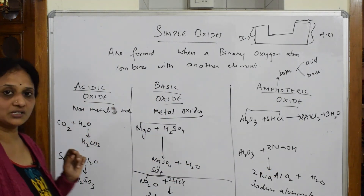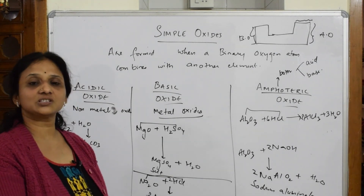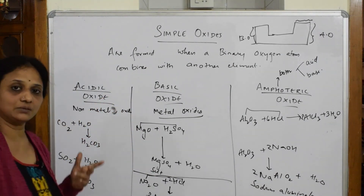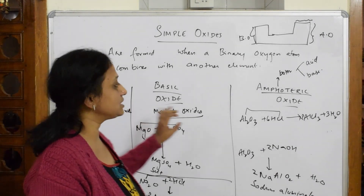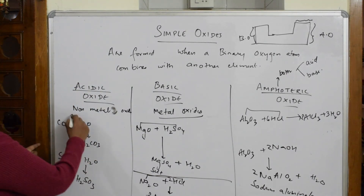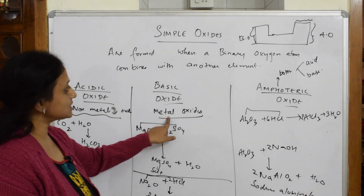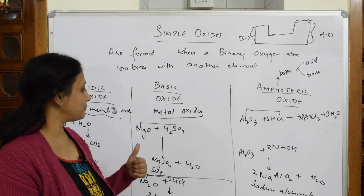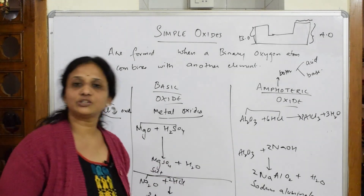In the exam, if they ask you to state examples of simple oxides, write: simple oxides are binary compounds — a combination of an oxygen atom with any other element. Non-metallic oxides form acidic oxides because when dissolved in water they form acids. Metallic oxides form basic oxides, proved by neutralization reactions forming salt and water. Amphoteric oxides, like Al2O3, react with both acid and base.